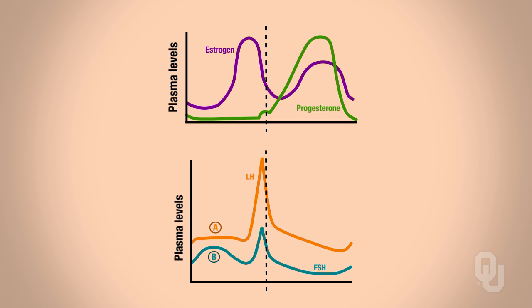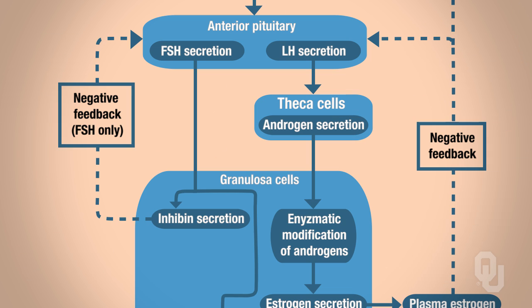If you look at the graphs above, notice that at that point in time there's low estrogen and low progesterone, and that's because the corpus luteum is degenerated. Let's go back to our flowchart and zoom in on what FSH and LH are going to do.